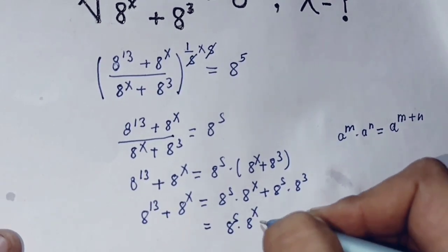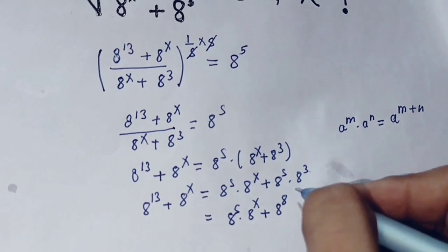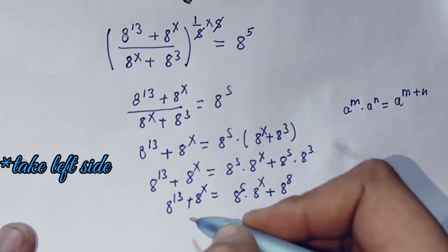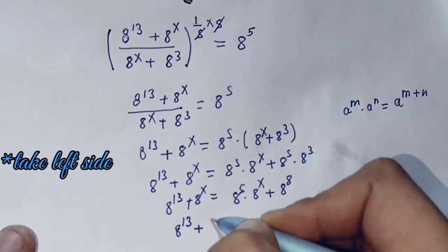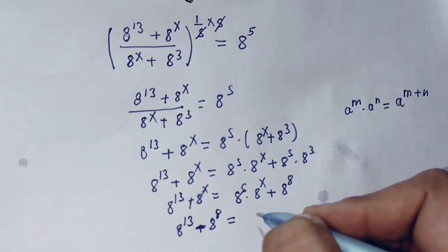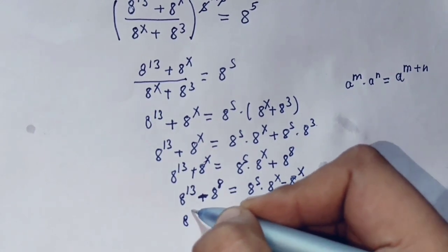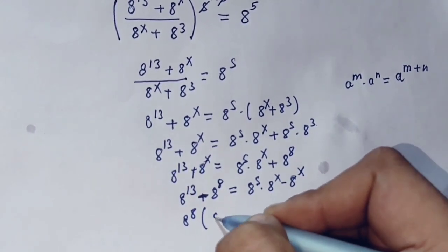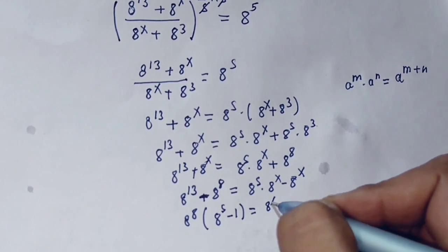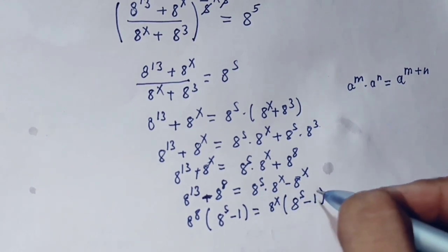Rearranging the equation and collecting like terms: 8 power 13 minus 8 power 8 on one side and 8 power (5 plus x) minus 8 power x on the other. Factoring and simplifying both sides, we get the base 8 terms to match, yielding x equals 8.